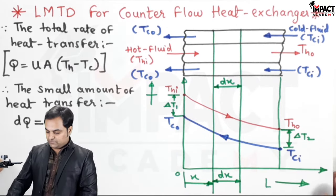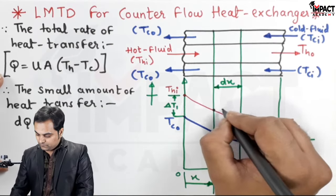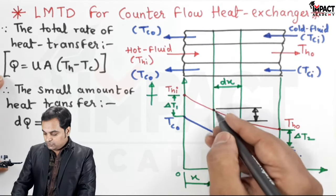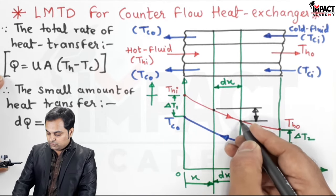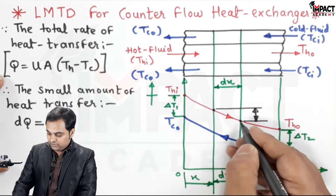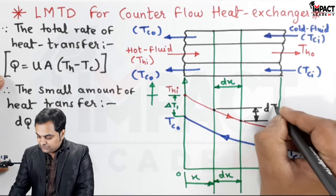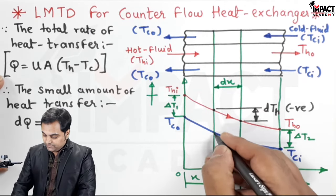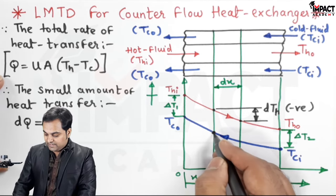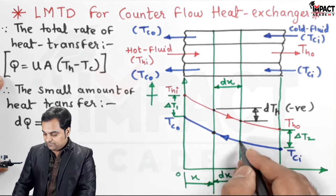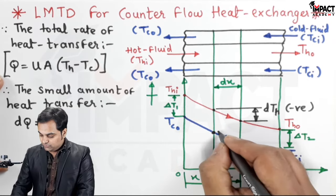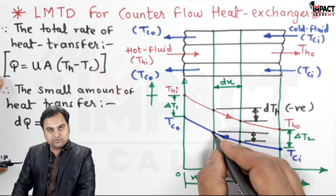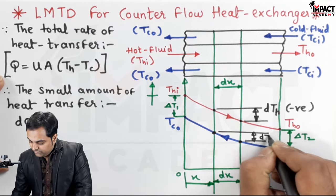Along this small length dx, we look at the temperature variation for the hot fluid. Taking the difference between the final and initial values along the length, since the final value is smaller, dTh — the temperature change of the hot fluid — is negative. Similarly for the cold fluid, along the length the temperature at the initial condition is greater than at the final position, so dTc is also negative.